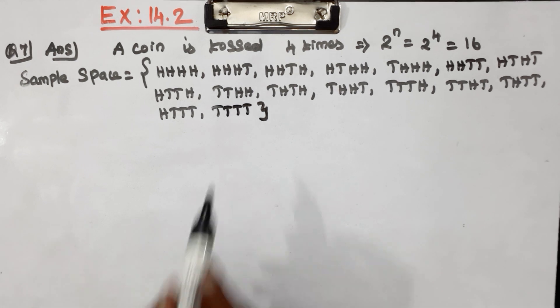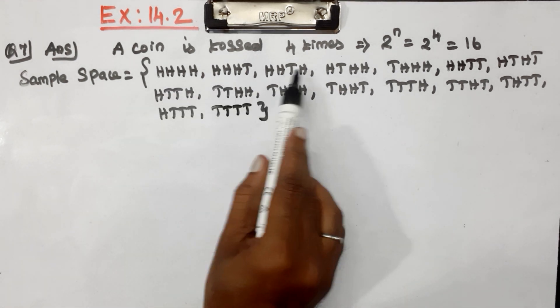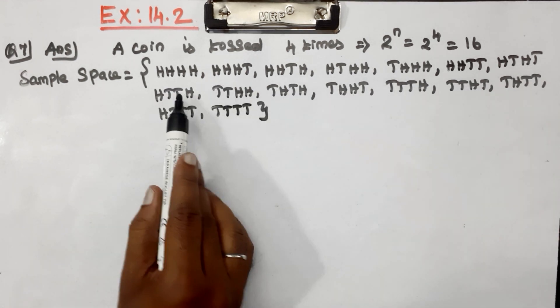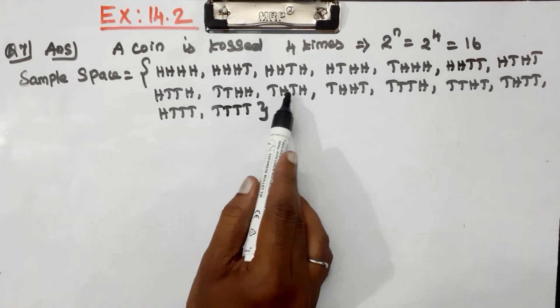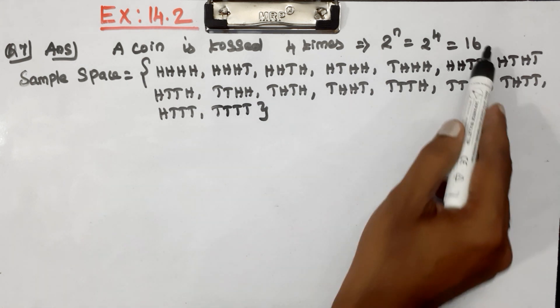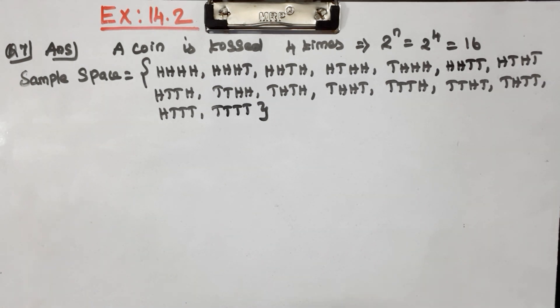Total number of sample space: 1, 2, 3, 4, 5, 6, 7, 8, 9, 10, 11, 12, 13, 14, 15, 16. Now 16 is confirmed — 2 power 4 is equal to 16.